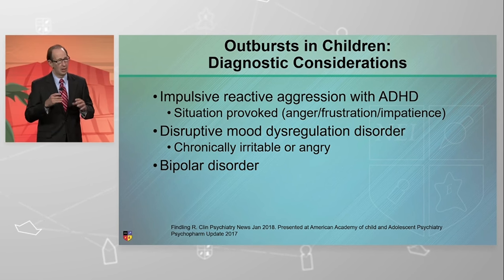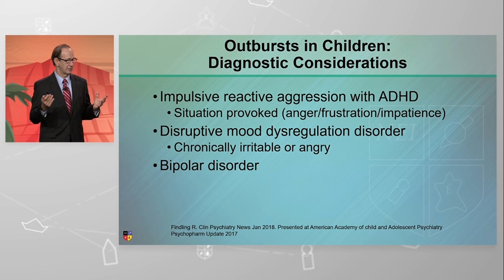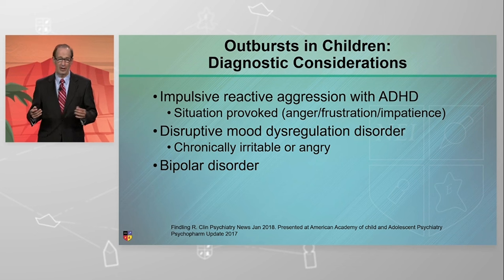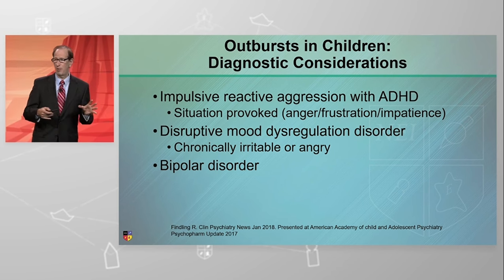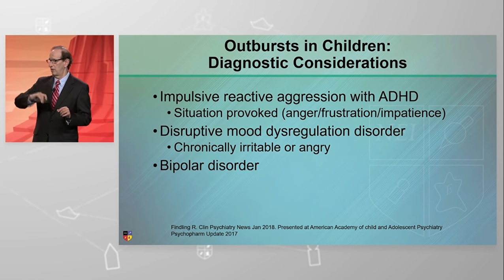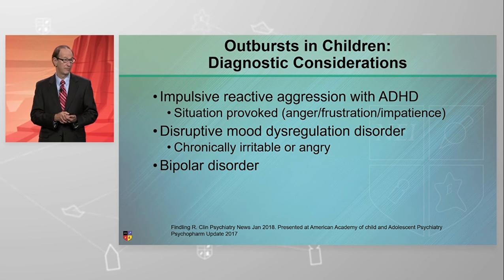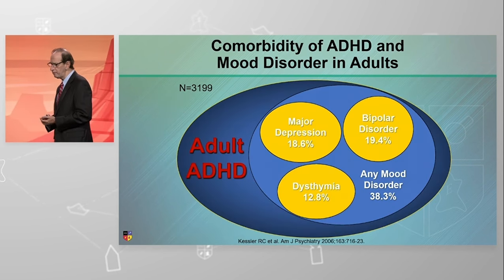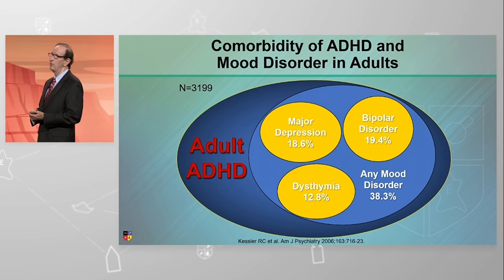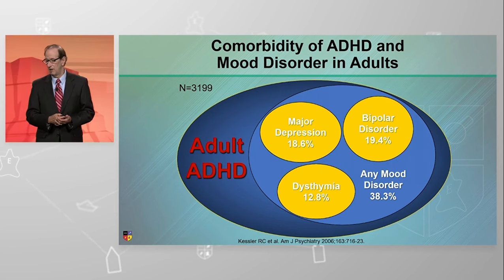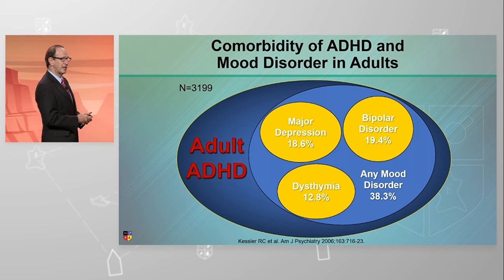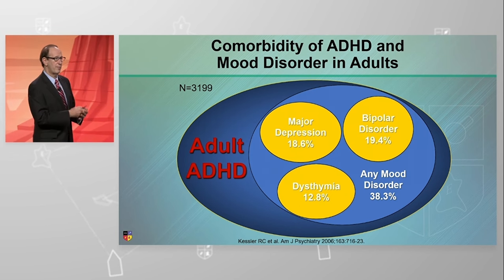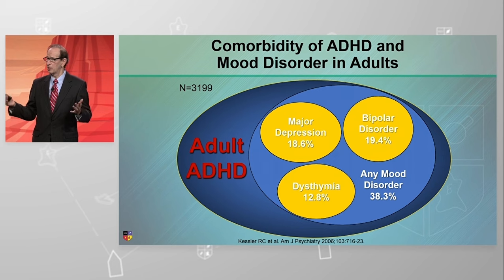If you're looking at children and they have angry outbursts, how do you know what that is? Is it an impulsive reaction to high frustration for an ADHD individual? Or is it disruptive mood dysregulation, which is separate from a mood disorder? Or is it bipolar disorder — an irritable child with cyclical patterns of changes in mood? Looking at adults, about 40% of patients with ADHD will have a mood disorder. So you want to do a comprehensive psychiatric evaluation, walking through the major psychiatric disorders that might occur.